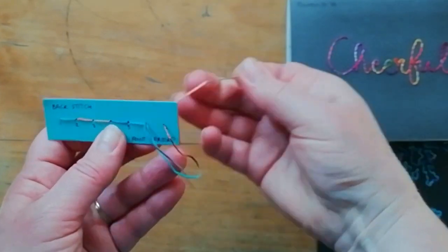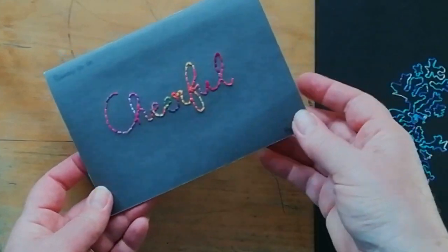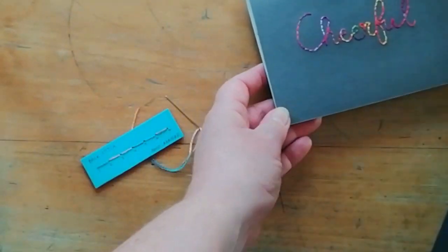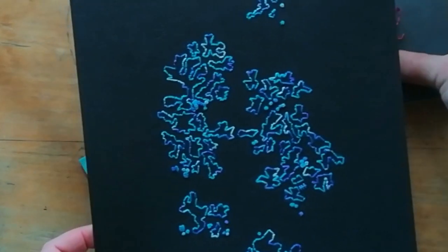And there you go, you can see that gives a nice continuous line of stitches, which is really useful, especially if you want to do some writing like this text or to make shapes, to do the outline of shapes. Backstitch is a great stitch to use.